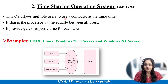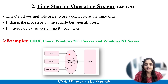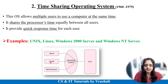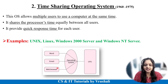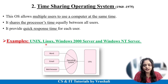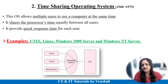The next type is called time sharing operating system, invented in 1960. This concept allows the operating system to let multiple users use the computer at the same time. For example, a user wants to use a word document, send an email, and browse a website — all these tasks are performed at the same time. The operating system gives CPU processing power to each and every task equally, providing a quick response time to the user. This concept is generally used in Unix, Linux, and older Windows versions like Windows 2000 Server and Windows NT Server.